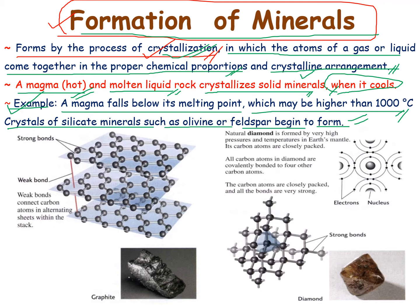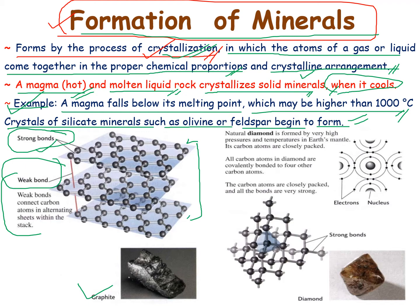Here we can see there are some strong bonds as well as weak bonds in a graphite crystal. Here is the structure of the graphite crystal, connected by weak as well as strong bonds. This is the orderly arrangement of atoms present in the graphite. Basically, minerals have an orderly arrangement.